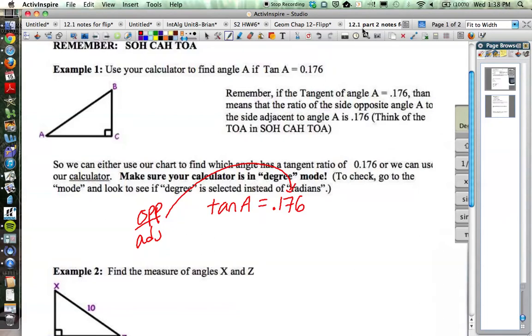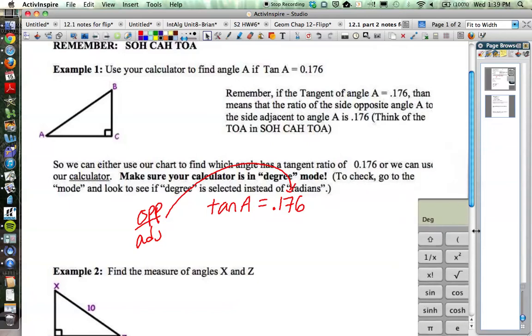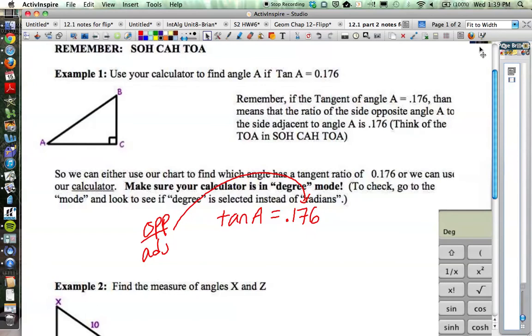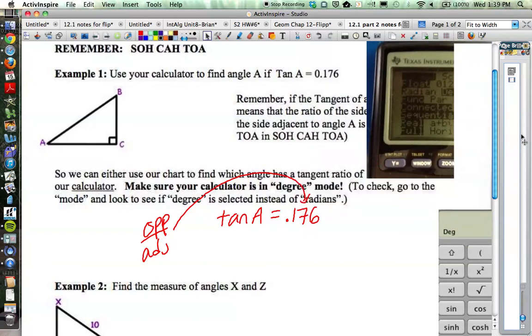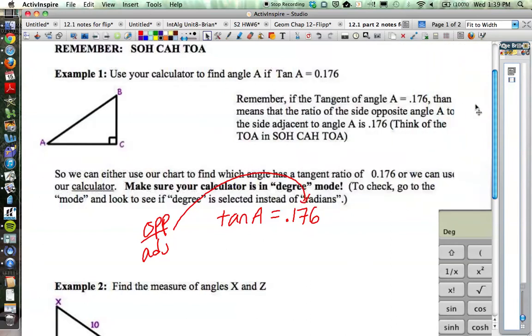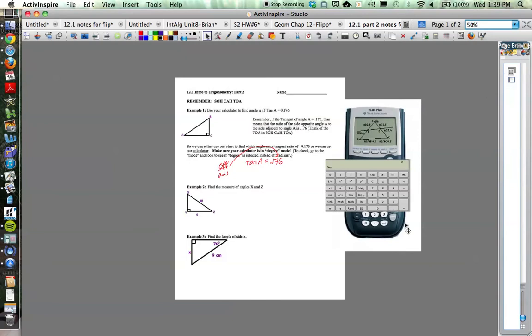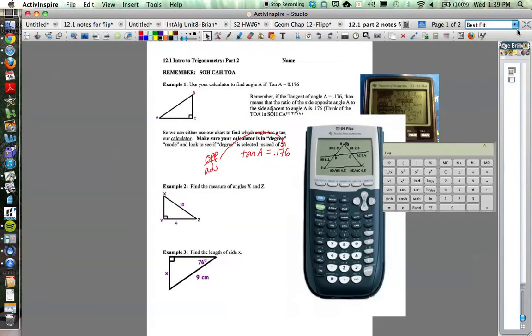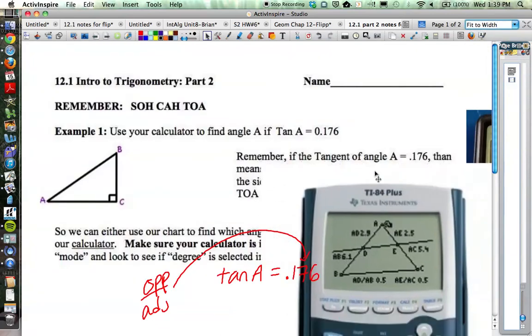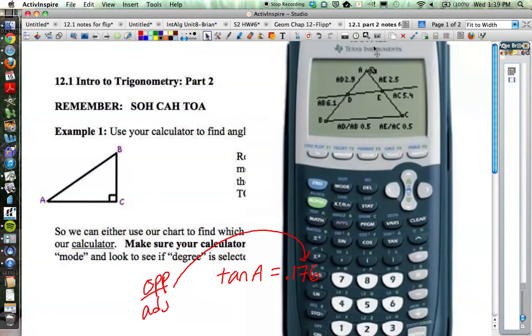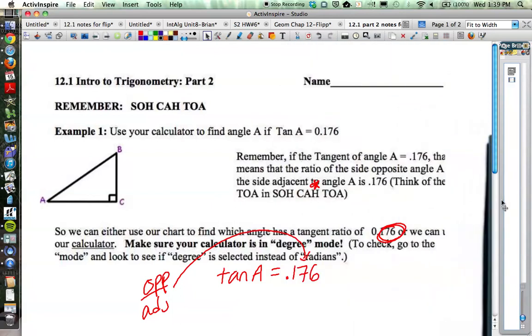Same thing is true on a graphing calculator. If you pull out the graphing calculator, you'll have the tangent button. Notice above the tangent button is the little tangent to the negative one. So you're going to hit the second button and then the tangent button to get that tan negative one to come up. And then we're going to use that to solve.